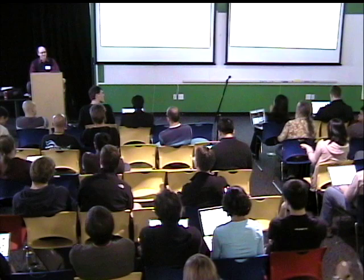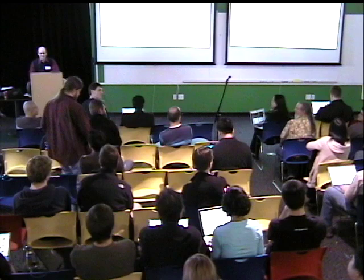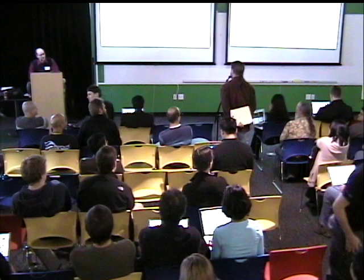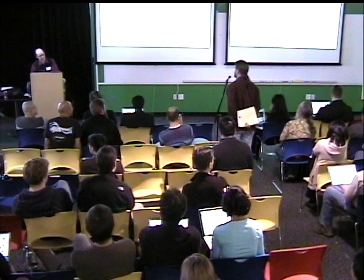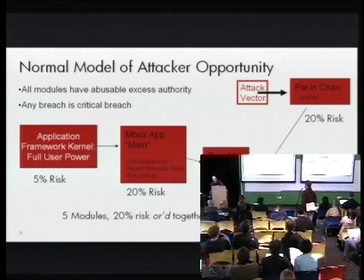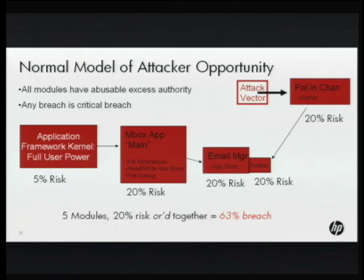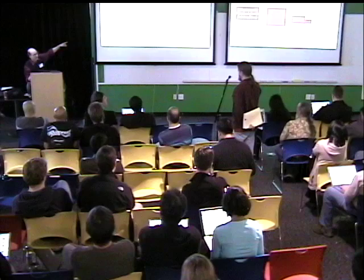Q&A: One question about the defense-in-depth slide — if you can attack the framework kernel directly, how does the risk get below 5%? The answer: there are two attack vectors on the kernel. A direct external attack is quite limited because of security reviews — all you can do is submit bad web keys and see if you can expose a failure. But if you can cause the main to make calls of your choosing on the framework, you're in a better position to exploit something. The extra vulnerability comes from traversing down through the poorly reviewed application running on top of the kernel, not from a direct external attack.